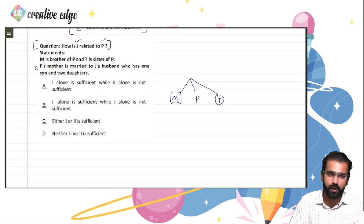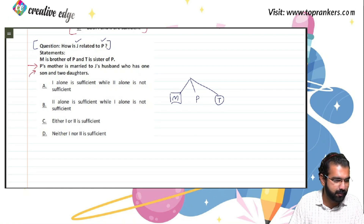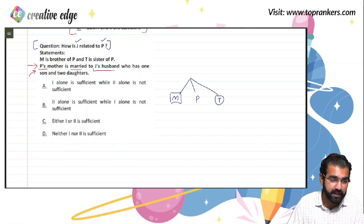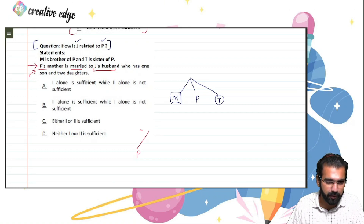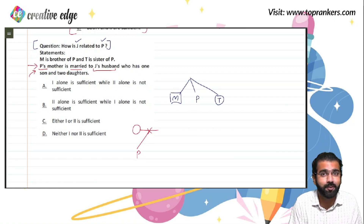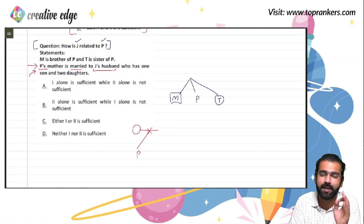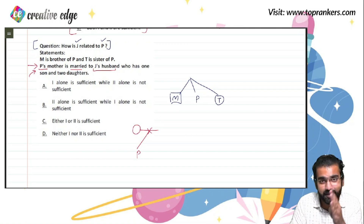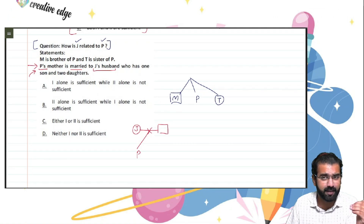I'll forget statement 1 and use statement 2 alone. Statement 2 says: P's mother is married to J's husband. Since polygamy is not allowed in blood relations questions, P's mother and J must be the same person. Therefore, J happens to be the mother of P. The relationship between J and P can easily be determined with this data alone.